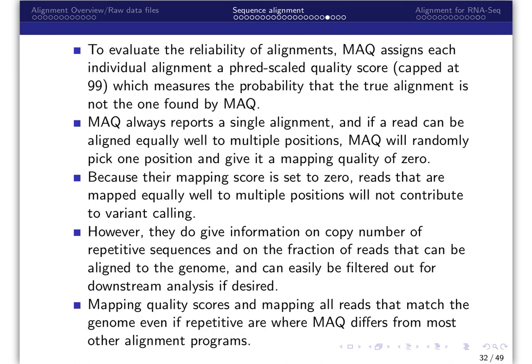To evaluate the reliability of alignments, MAC assigns each individual alignment a Fred's scaled quality score capped at 99, which measures the probability that the true alignment is not the one found by MAC. MAC always reports a single alignment, and if a read can be aligned equally well to multiple positions, MAC will randomly pick one position and give it a map quality of zero.